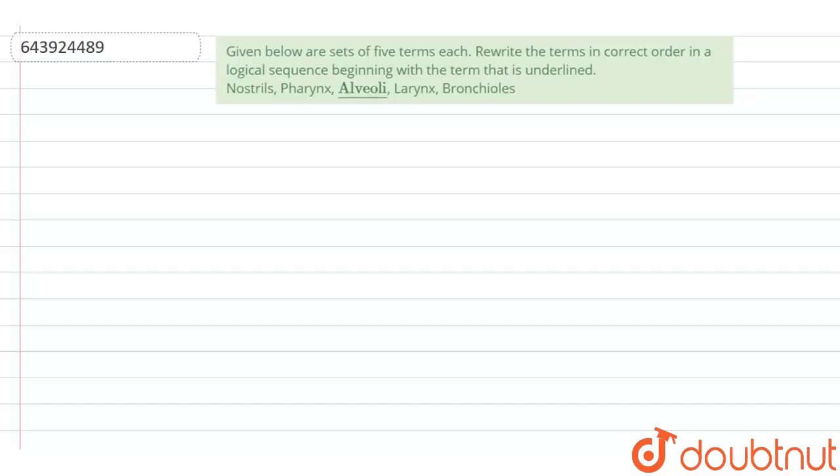Hello everyone. Today we are going to see the following question. The question is: given below are sets of five terms each, rewrite the terms in correct order in logical sequence beginning with the term that is underlined. So the underlined term is alveoli.